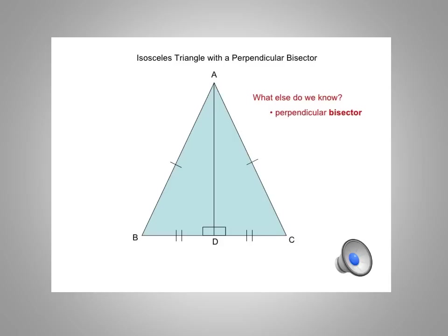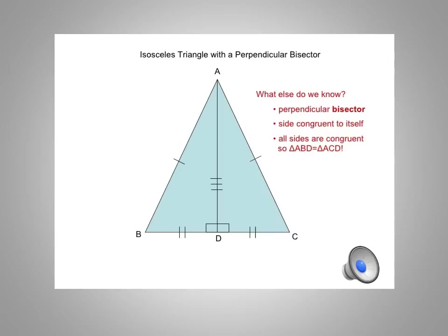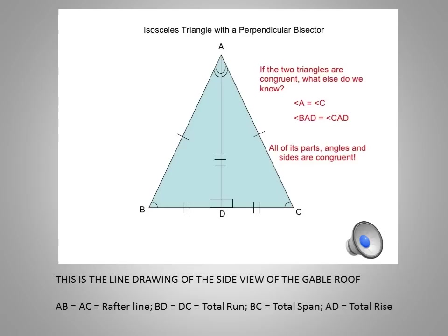We have the isosceles triangle with a perpendicular bisector, and there are some other things that we know as a result of this. The perpendicular bisector divides the isosceles triangle into two congruent triangles. When triangles are congruent, all the sides and all the angles are equal. This is important for roof geometry, especially the gable roof.